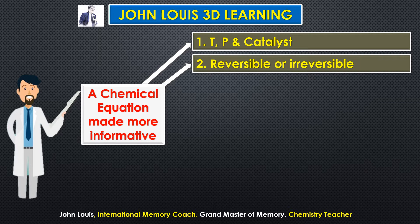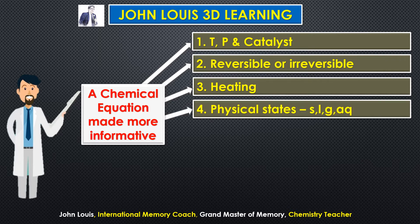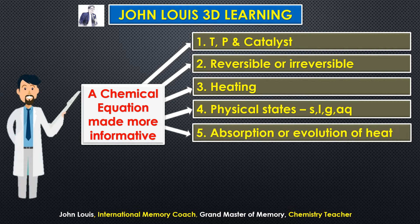Third, heating — whether we have to supply heat or whether the chemical reaction is giving out heat — can be mentioned in the equation. Then, the physical states of the substances — solid, liquid, gas, or aqueous — can be mentioned in the chemical equation, along with whether heat is absorbed or evolved.